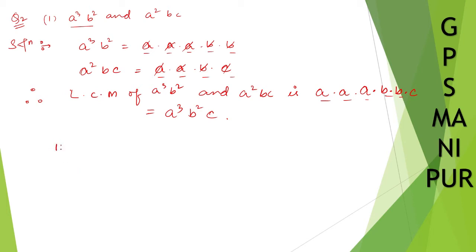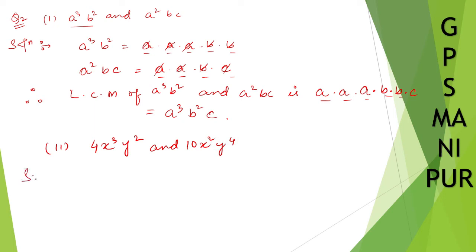Let us do roman number two. We have 4x cube y square and 10x square y to the power four. Solution.